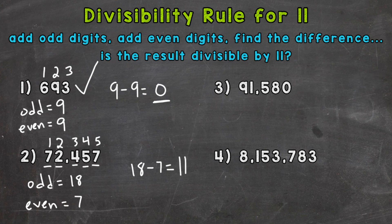11 is divisible by 11. Therefore, our original number, 72,457, is divisible by 11.